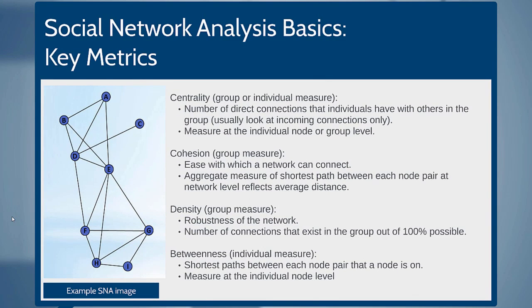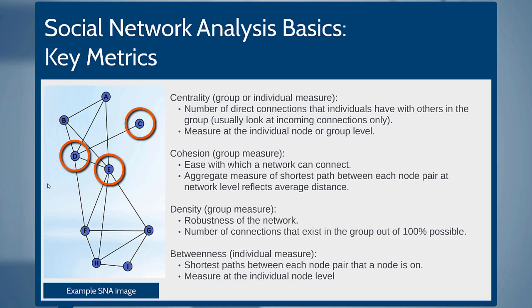After we look at these clusters, subgroups, and cliques, we can look at individual nodes and certain measures that apply to them. Centrality looks at the number of connections that an individual may have within a group — we tend to look at incoming connections, as that's more important. Cohesion shows the strength of connections between the group and the ease by which you can go from one part of the network to the other. Density looks at the robustness — in other words, how strong the network is if you remove a connection. A, B, D, and E are quite a dense subgroup, because if you remove any of those connections, you can still get from one part of the network to the other. However, C, D, and E aren't as well connected, because if you remove the connection from C to D, there is no other way for C to be connected to the network.